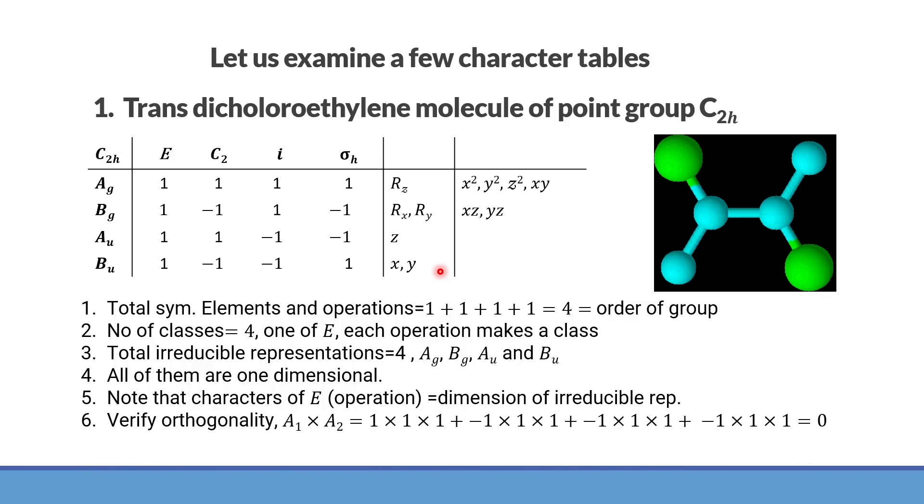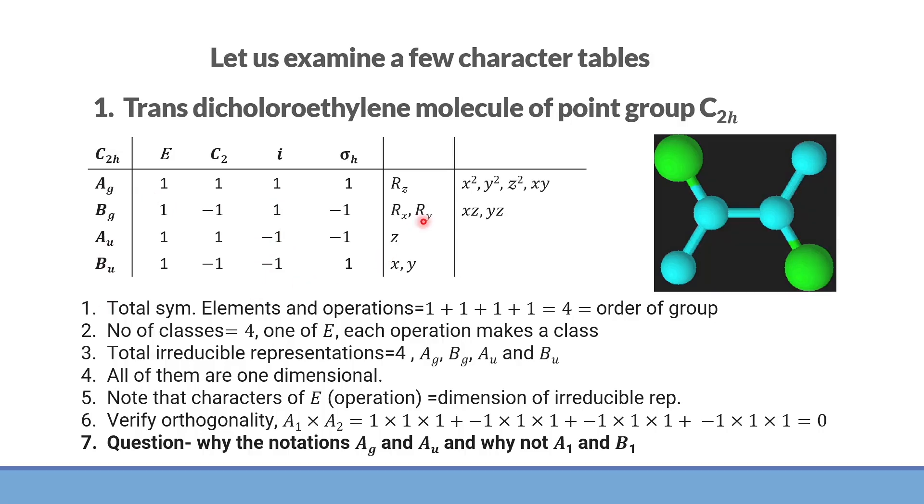Now, the question is, why AG and AU notations not A1 and B1? Because here, we are talking about I. I is there. If it is symmetric with respect to I, the characters are positive. If it is anti-symmetric with respect to I, the characters are negative. And therefore, AG, BG and AU, BU terms have been used here.